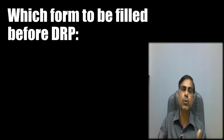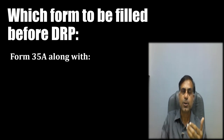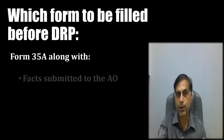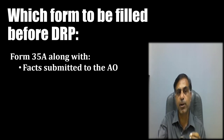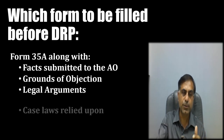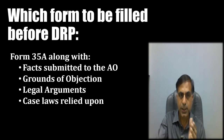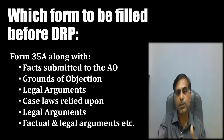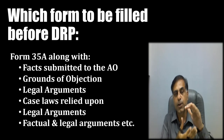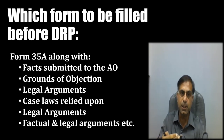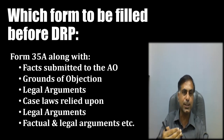You would also be interested in knowing which form is to be filled before the DRP. Form 35A is prescribed for this purpose. This Form 35A will be submitted along with the facts submitted to the AO, the grounds of the objection, the legal arguments you want to put up, the case laws on which you are seeking relief, and factual and legal arguments. All these things have to be put up along with your application for submission before the DRP, which will then consider the application and issue its final directions.